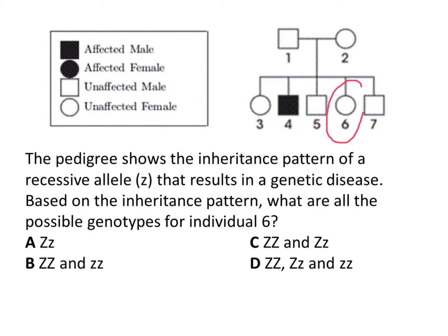I'm looking for what might be the genotypes of individual six. It told me that the genetic disease is the result of a recessive allele. That means to be affected by this disease, an individual would have to be homozygous recessive — little z, little z. Because individual six is not affected by this disease, that means individual six definitely does not have the genotype little z, little z. It is not homozygous recessive; if it was, it would have this disease.